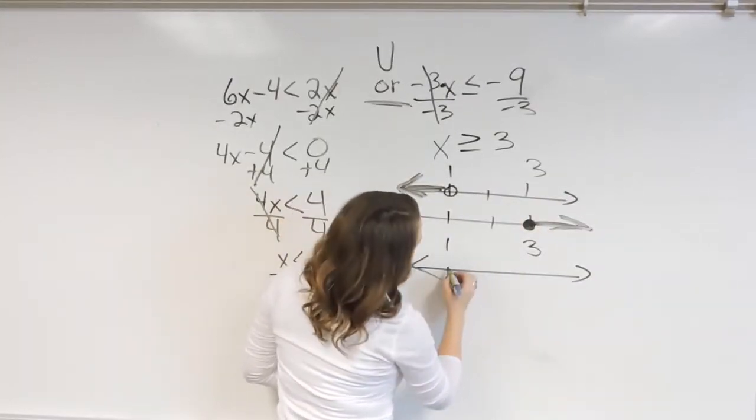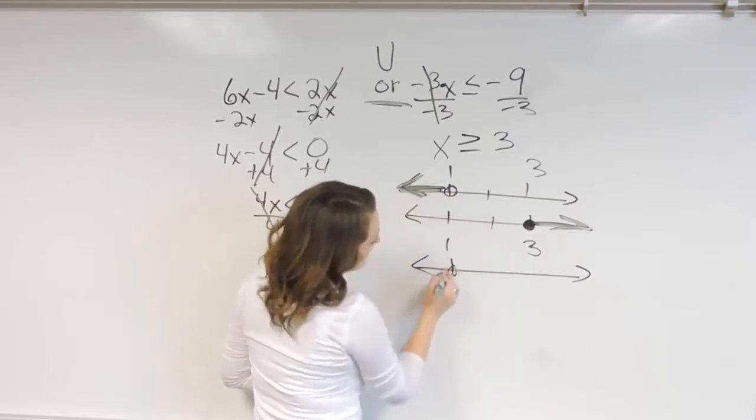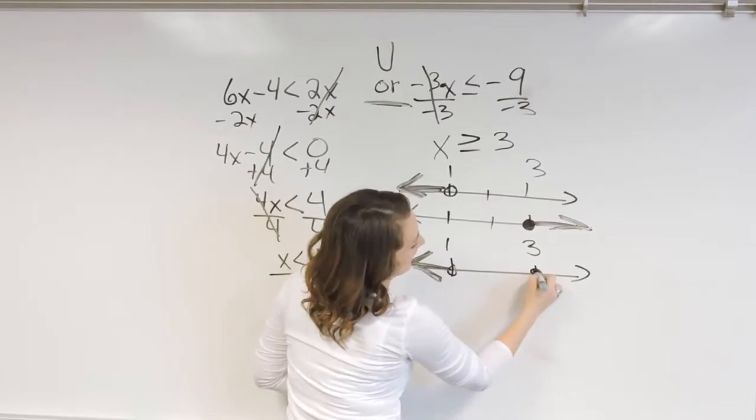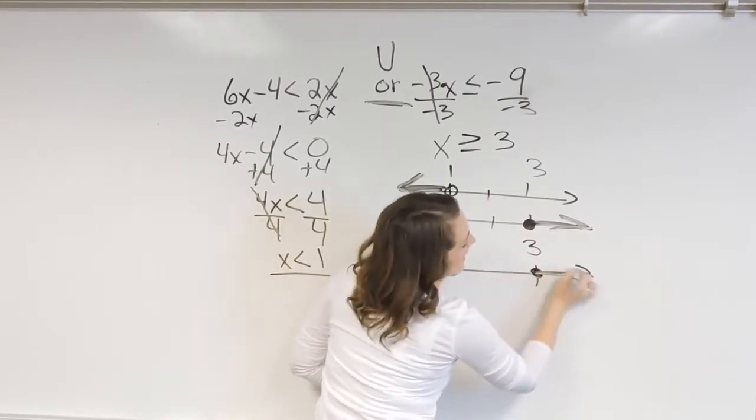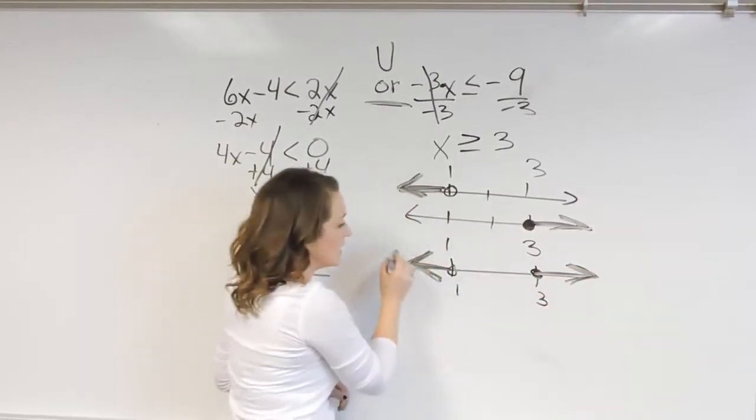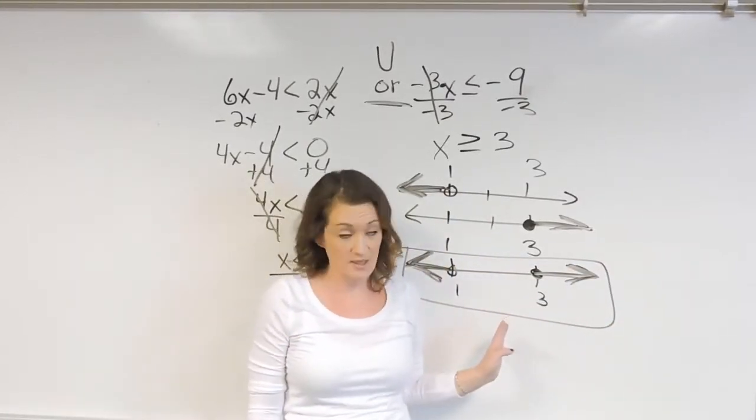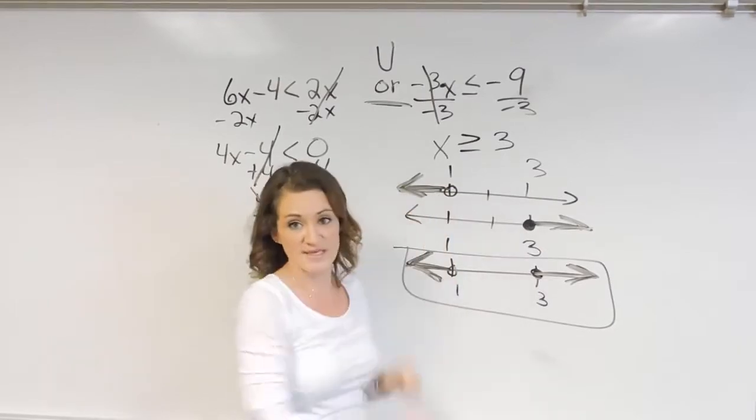My graph would look like this. So we have an open dot at 1 and we had everything shaded over here. But then we also have a solid dot at 3 and have everything to the right shaded. So this right here is what my solution graph would look like, because I'm just putting both of these together.